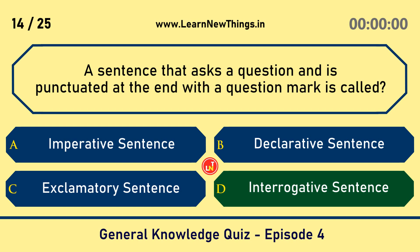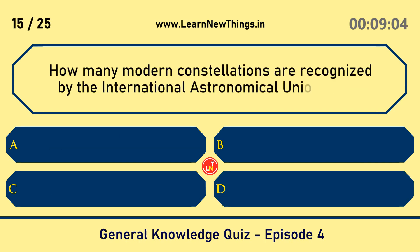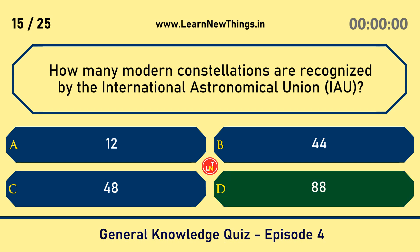How many modern constellations are recognized by the International Astronomical Union? 88.